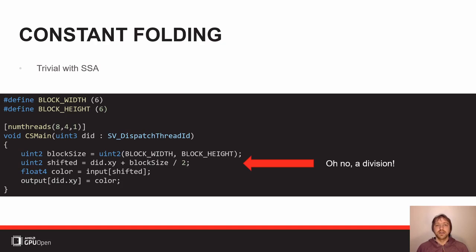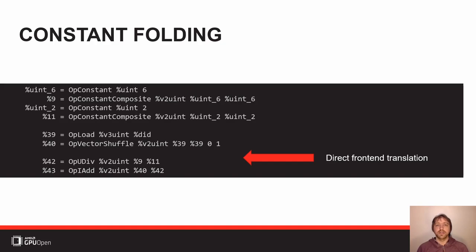In SPIR-V intermediate representation as it comes out of the front end directly, you can see it defines literal constant 6 as the block size, a two-component vector with both elements being 6, similarly the constant 2, and then an explicit division operation. During constant folding, the compiler looks at this division, and thanks to SSA both operands are only assigned once to constants. So the compiler can do the division at compile time and replace the division by the literal constant 3.